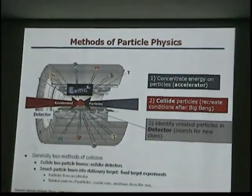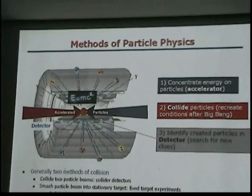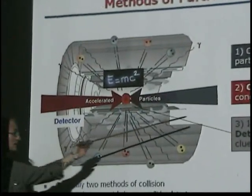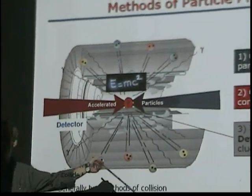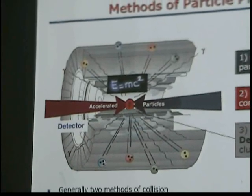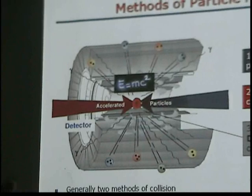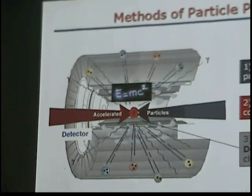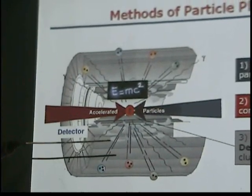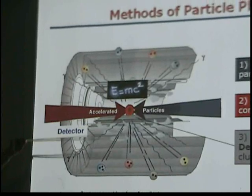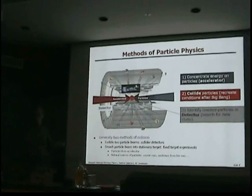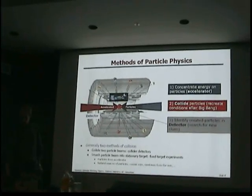So what are the methods that we use? The methods are actually very simple. We concentrate energy in particles using an accelerator, then we collide them — either head-on if two beams collide, which gives us a collider detector, or we smash them into a stationary target, which we call a fixed target experiment.